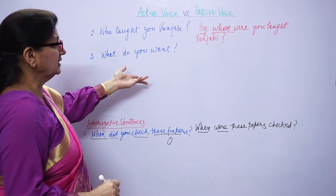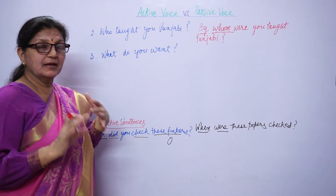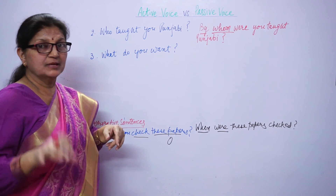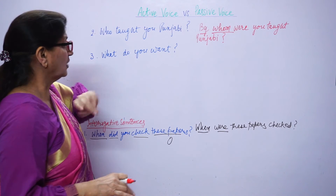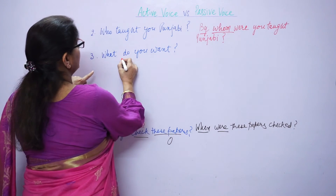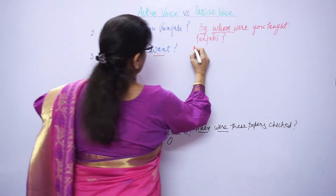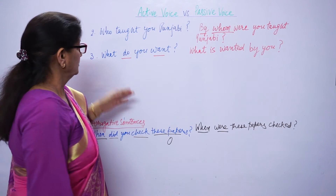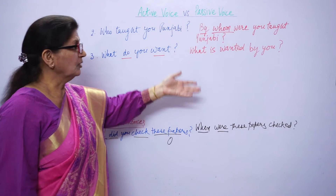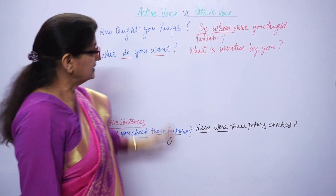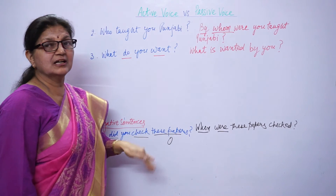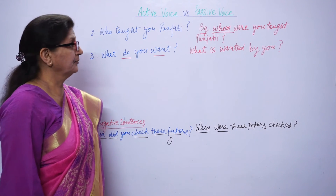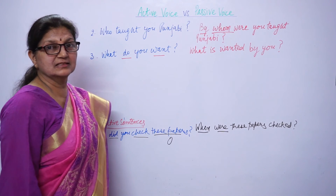Now what do you want? Advanced level ki grammar ko check karne ke liye, is type ke sentence aapke exams mein aa jaate hain. What is wanted? Aap is ko — present indefinite tense is there. Chukki ye indefinite ka sentence hai, toh aapko is form ka use karna hai. Yeh sentences aap tabhi achi tarah kar paayenge jab aap pehla episode is topic ka dekhenge. Toh aaj humne yeh sentences discuss kiya hai.